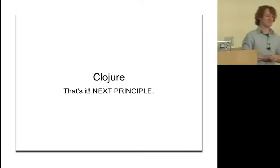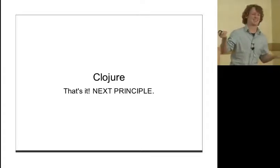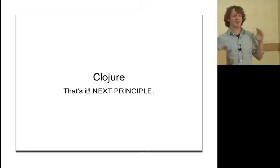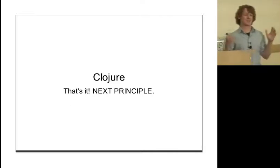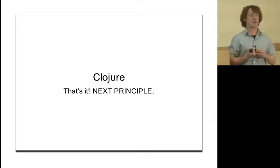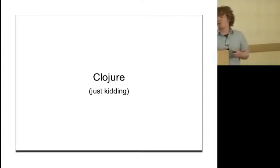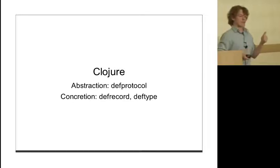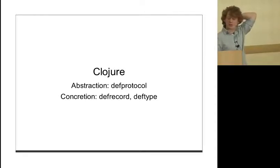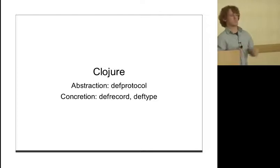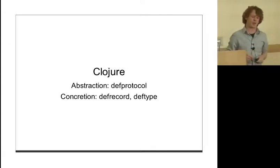Clojure also has Java interop capabilities. We can talk about interfaces and abstract classes using definterface and gen-class. But those things suck. Who uses definterface and gen-class and really likes to live in that world? It's tremendously painful to work with these things. It's awesome when you need it because it's just what you need - you need to interact with Java, maybe you need actual class files or AOT stuff. But it's not the most fun thing to work with.